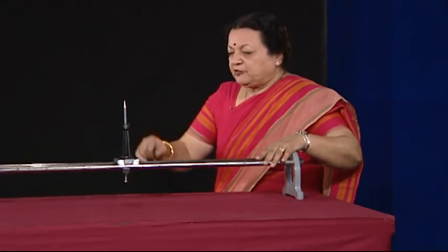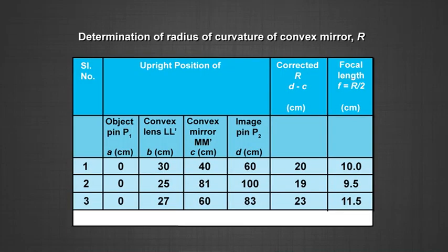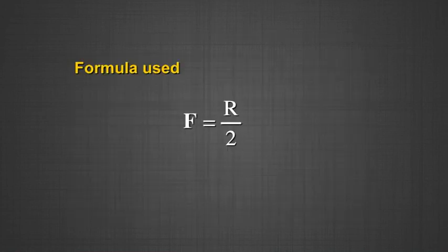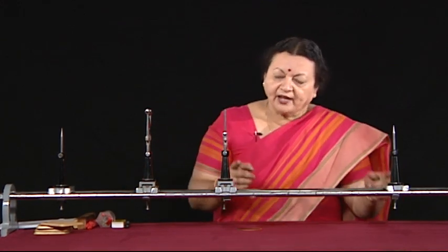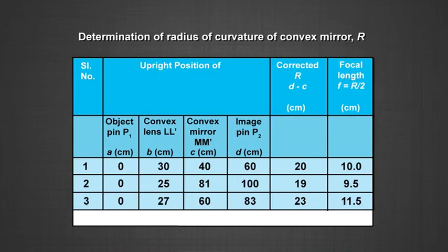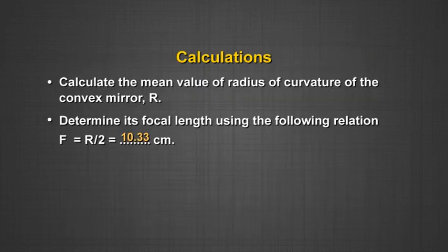Next, remove the convex mirror, allow the rays to go after refraction, and use the image locator pin to remove parallax between the object pin and this image locator. The difference between these two positions is the radius of curvature of the convex mirror, and half of that gives the focal length. Take at least three readings by changing the setup slightly each time, find the average radius of curvature, and half that to get the focal length.